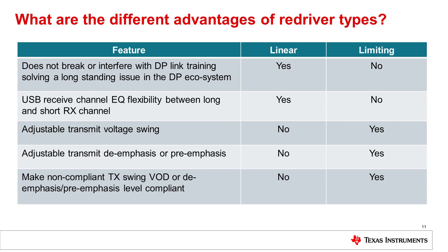The limited re-driver, with its own amplitude and pre-emphasis, breaks up the channel and interferes with the DisplayPort link training. For USB 3.1, a certain amount of over-equalization is acceptable for the linear re-driver. Over-equalization effectively becomes transmitter pre-emphasis, provided the swing is within the linearity range of the linear re-driver. This allows optimization between the USB required long and short channel support. But for the limiting re-driver, this over-equalization results in uncorrectable jitter.